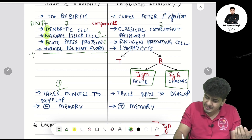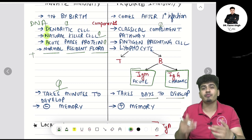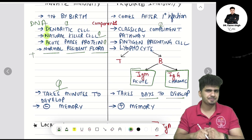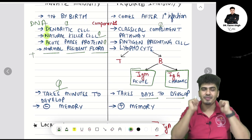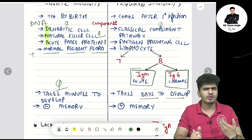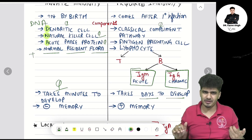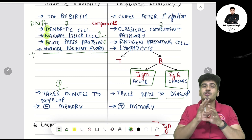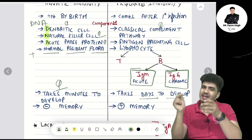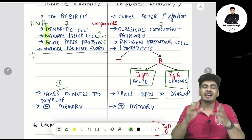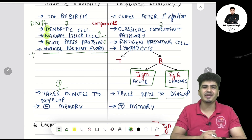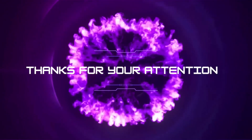Regarding memory: innate immunity has no memory because there are no T helper cells. Acquired immunity has memory because it has T helper cells. Thank you.